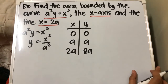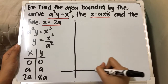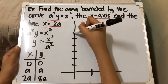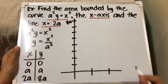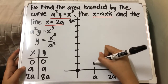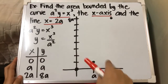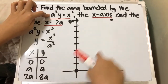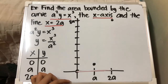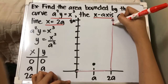Plotting these values on our graph: the x-axis shows 0, a, and 2a; the y-axis shows values up to 8a. The point (0,0) is at the origin, (a, a) is here, and (2a, 8a) is further up. The boundaries of our area are the curve itself, the x-axis, and the vertical line x = 2a.